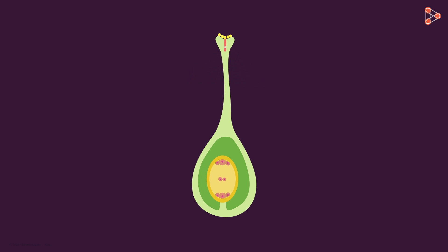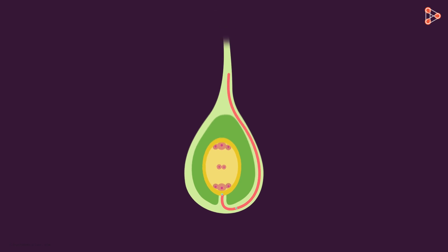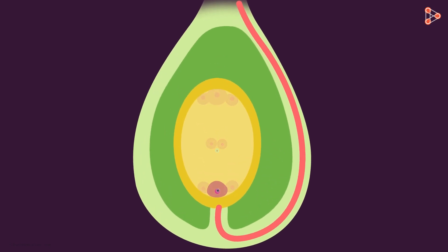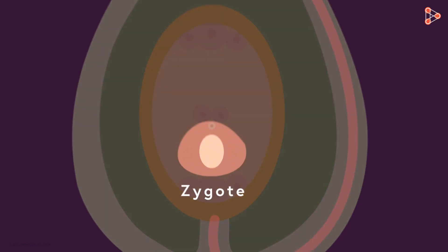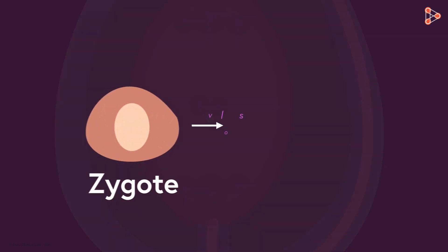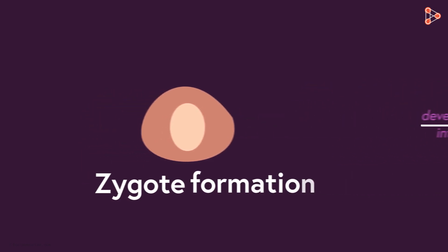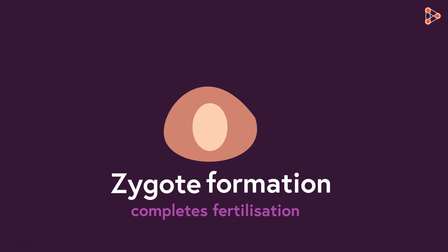The pollen tube is formed from the pollen grain itself. The tube travels down the complete style and ultimately reaches the ovary, carrying along the male gamete, which is safely taken to the ovary. Once the gamete reaches the ovary, the tube fuses, giving rise to the formation of a single cell — the zygote. The zygote will further develop into an embryo. Zygote formation in plants marks the completion of fertilization.